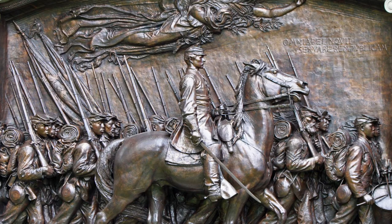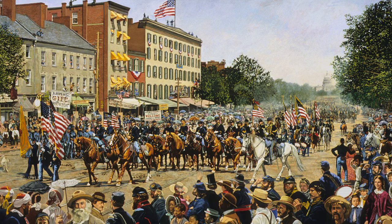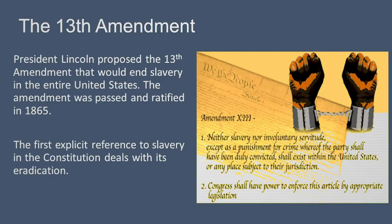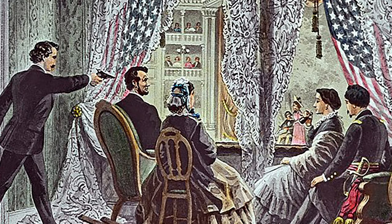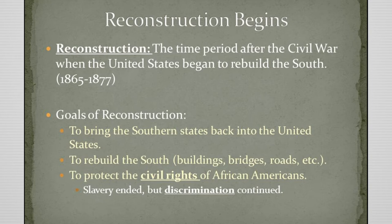In 1863, Massachusetts' 54th Regiment of African-American troops, led by Robert Gould Shaw, marches out of Boston on May 28th heading into combat. In 1865, the Civil War ends, the 13th Amendment to the Constitution prohibiting slavery is ratified, Lincoln is assassinated, and the era of Reconstruction begins.